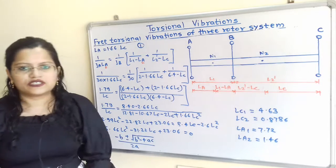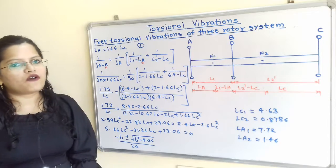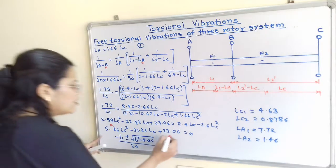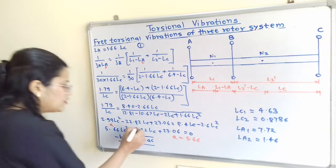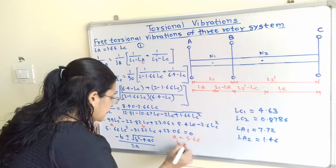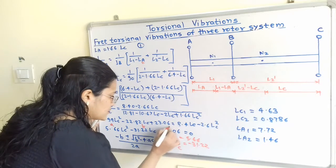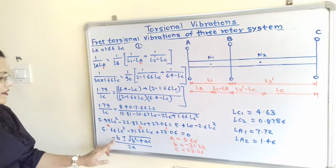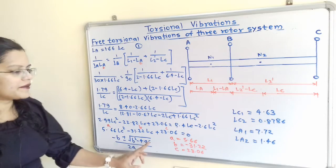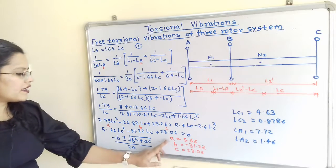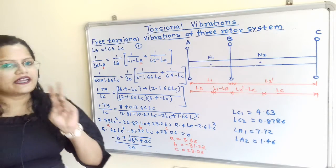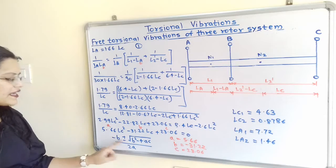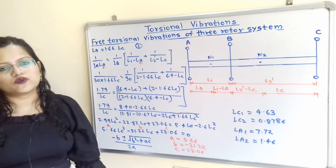This is a second-order equation. Using the quadratic formula with A = 5.66, B = −31.22, and C = 23.06, the solution is LC = (−B ± √(B² − 4AC)) / 2A. Taking the plus sign gives one solution and the minus sign gives the other.